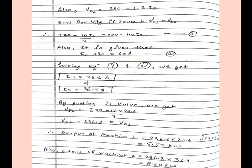Now in question it is given that bus bar voltage is same, that is VI1 equals VI2. So VI1 equals VI2, now from here we will get one equation, equation number 1. Also it is given that I1 plus I2 equals 60 ampere, so this is our equation number 2. We have two variables and two equations.